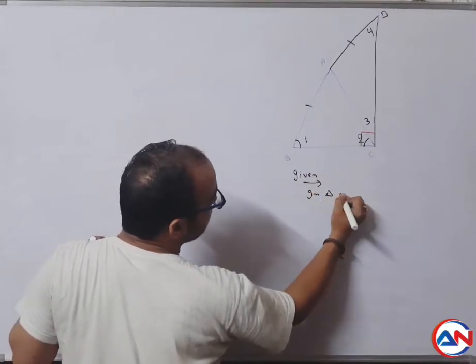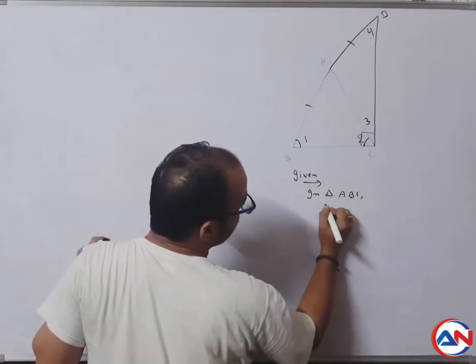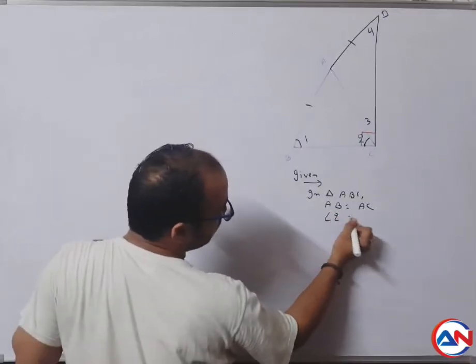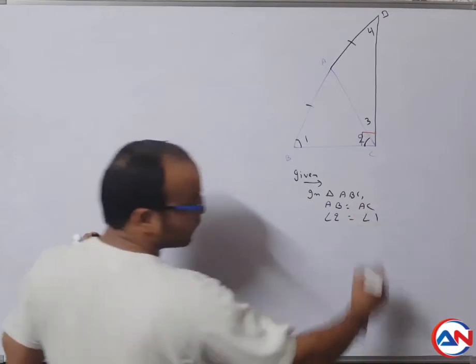Given: in triangle ABC, AB is equal to AC. Opposite of AB is angle number two, and opposite of AC is angle number one.